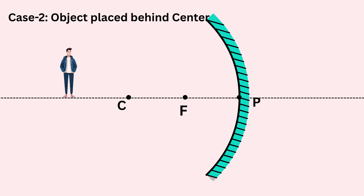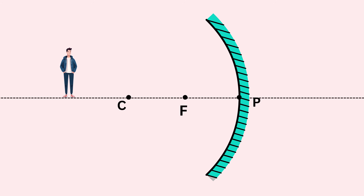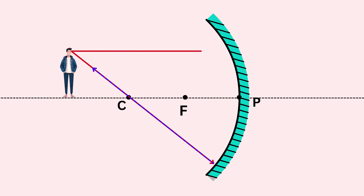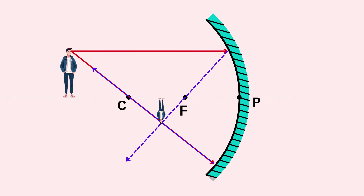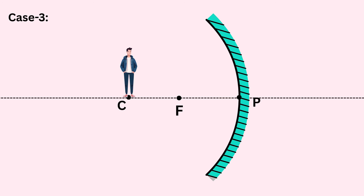Case two: the object is placed somewhere beyond the center of curvature. We draw two rays from the top of the object — one through the center of curvature C, which reflects back along the same path, and another parallel to the principal axis, which reflects through the focus. These two reflected rays meet at a point between C and F on the reflective side of the mirror. The image is real, inverted, and diminished.